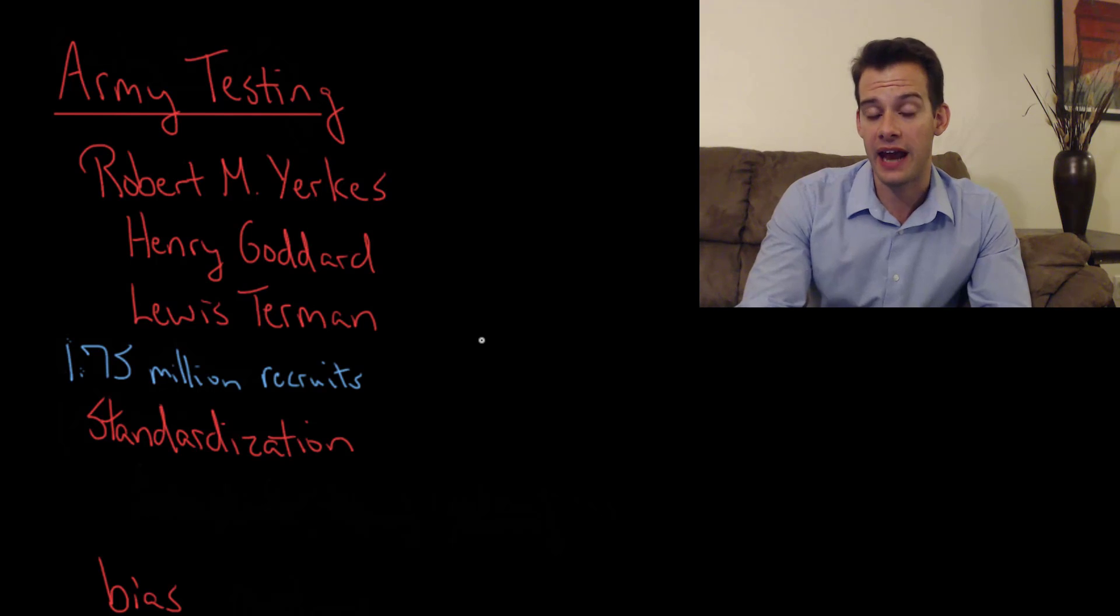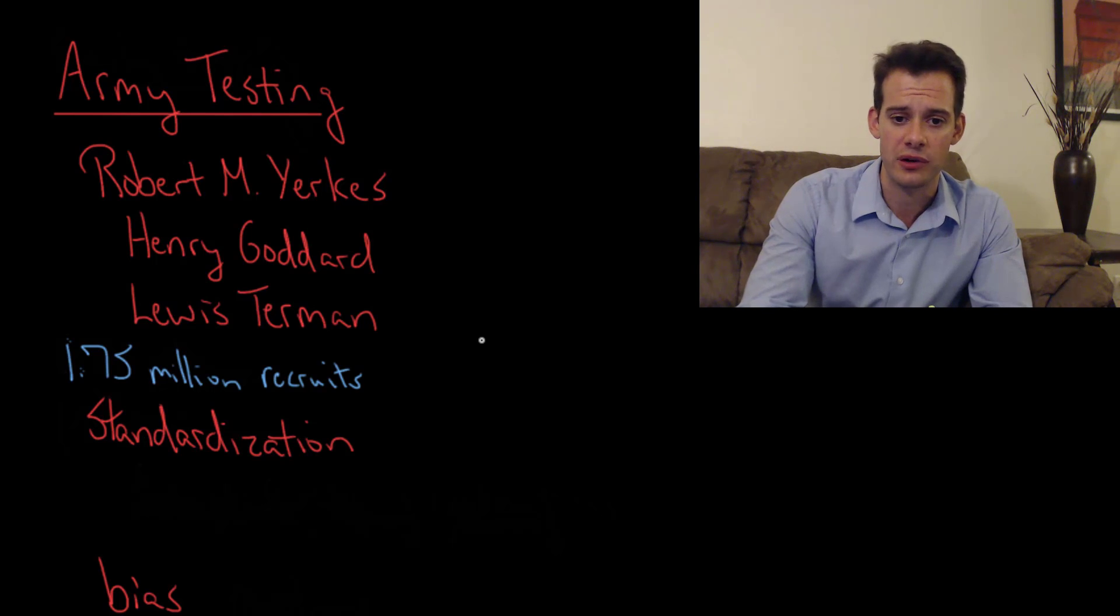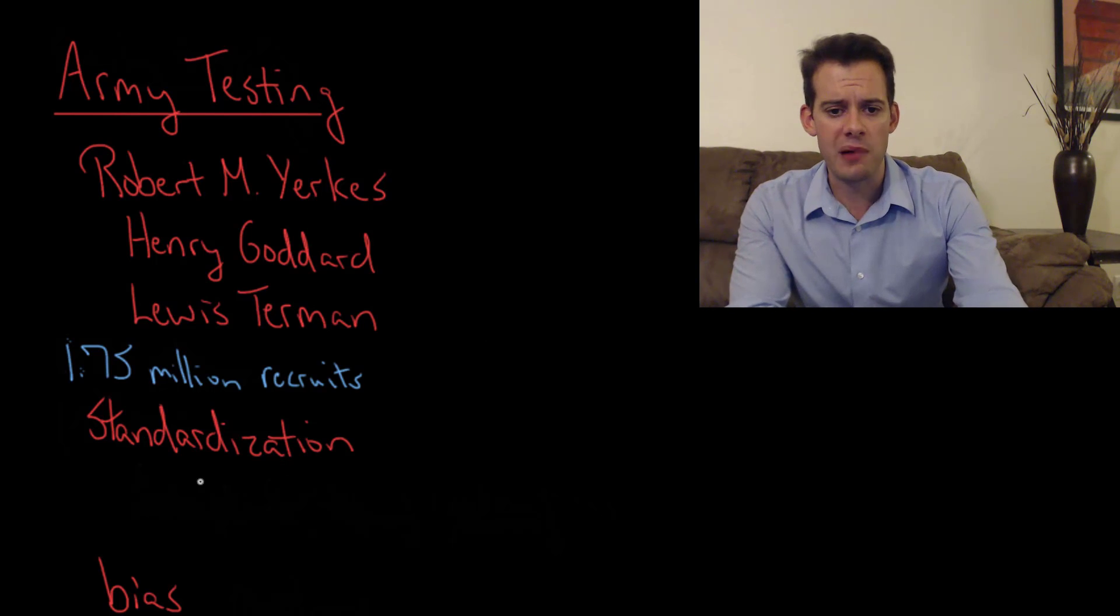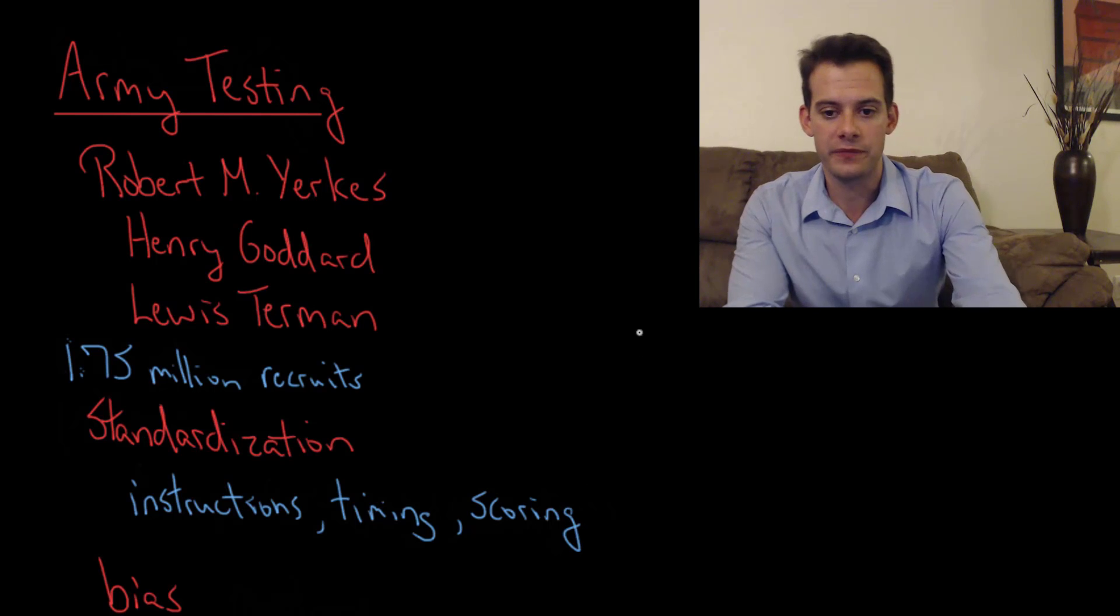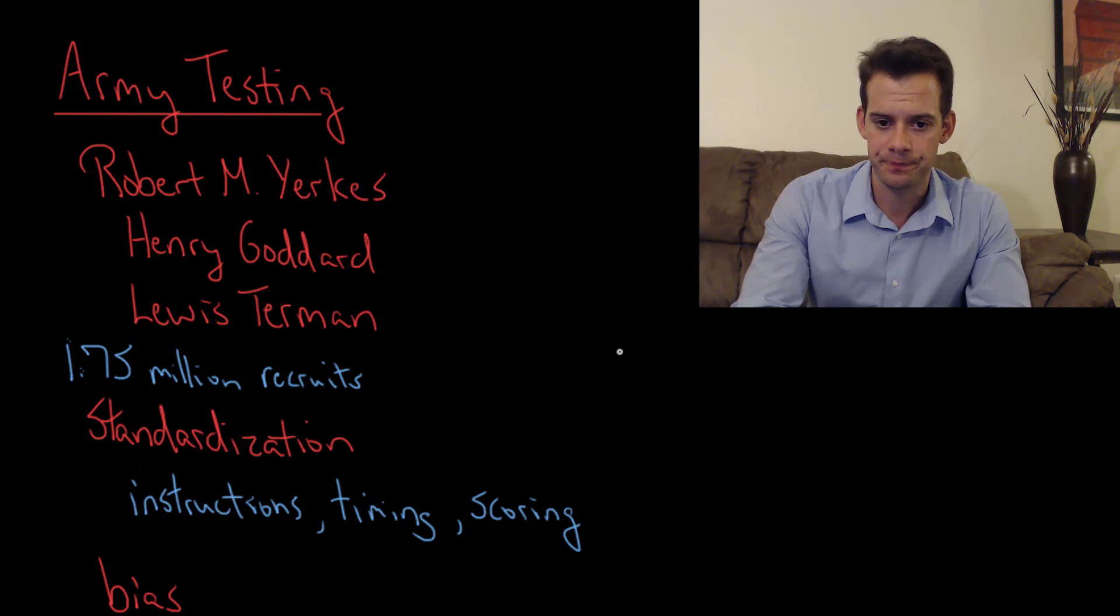There were a number of problems with these tests. These were described in an essay called A Nation of Morons by Stephen Jay Gould, which was a chapter of his book, The Mismeasure of Man. Gould points out a number of problems with these Army tests. The first problem was that these tests weren't very well standardized. They didn't have clear standardized instructions. They didn't have standardization for timing of different sections of the test. And they didn't even necessarily have clear rules for how the tests should be scored. So this is a big problem for assessing the results of these tests.